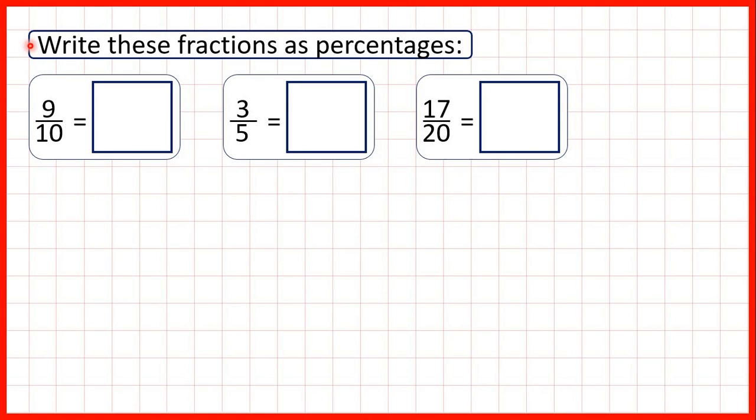We need to write these fractions as percentages, so first we have nine-tenths. Now remember, a percentage is a fraction over a hundred, so we need to find a fraction equivalent to nine-tenths, which has a denominator of a hundred.